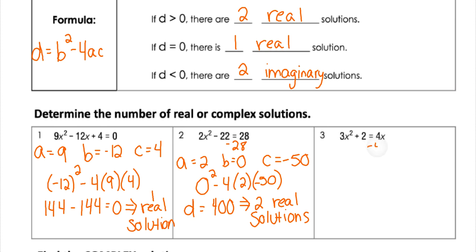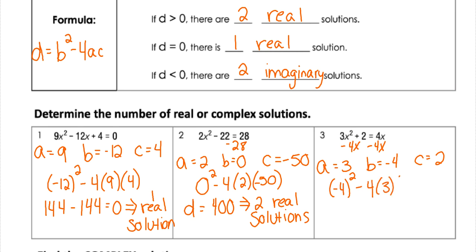For the last discriminant example, I subtract 4x to set it equal to zero. So a is 3, b is negative 4, and c is 2. Computing b squared — being careful to square the negative b value — minus 4 times 3 times 2: that gives 16 minus 24, a discriminant of negative 8. That means we have two imaginary solutions.